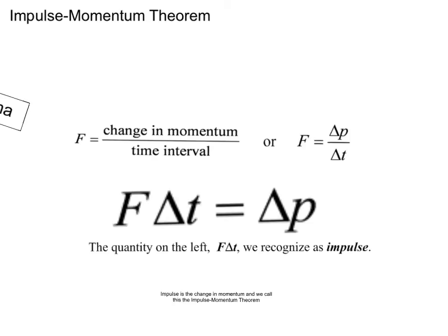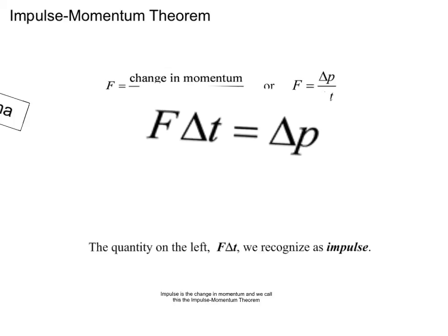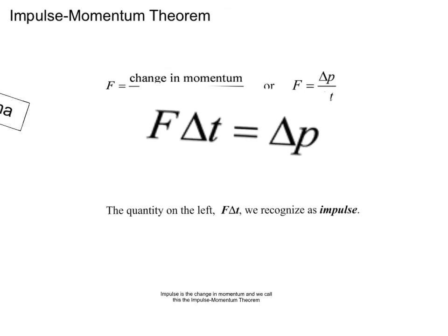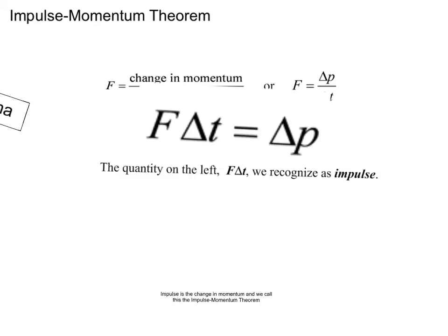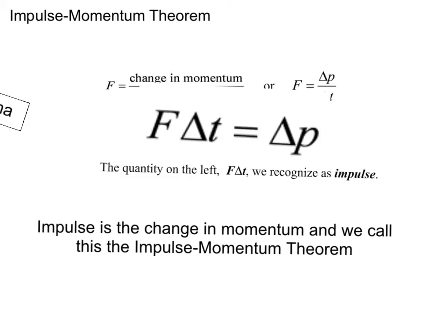So, impulse is the applied force multiplied by the time over which it acts. This quantity is equal to the change in momentum of a system. So, we can say that impulse is the change in momentum and we call this the impulse momentum theorem.